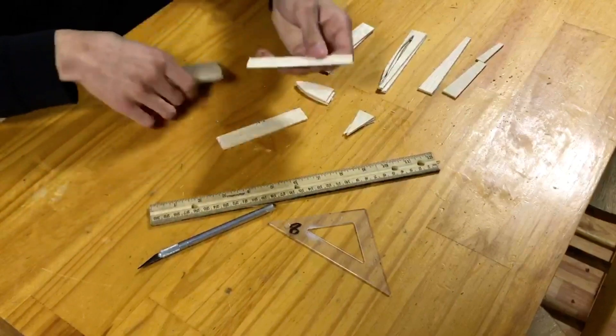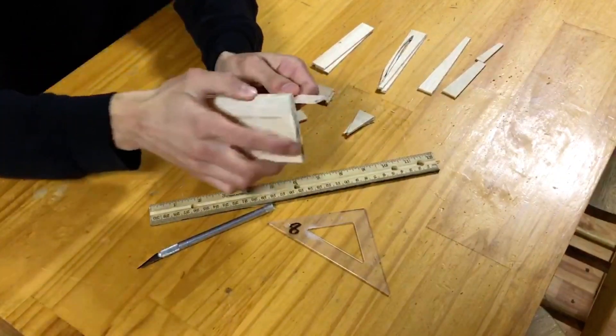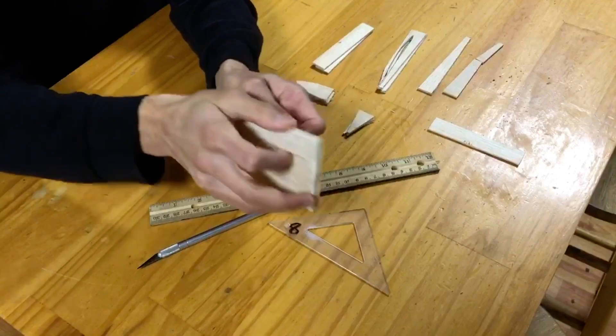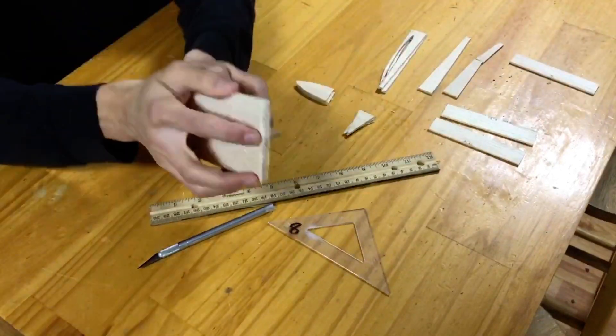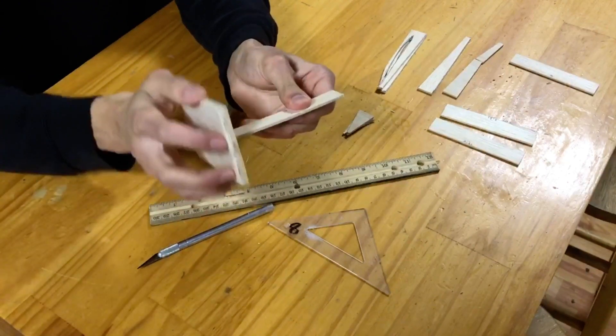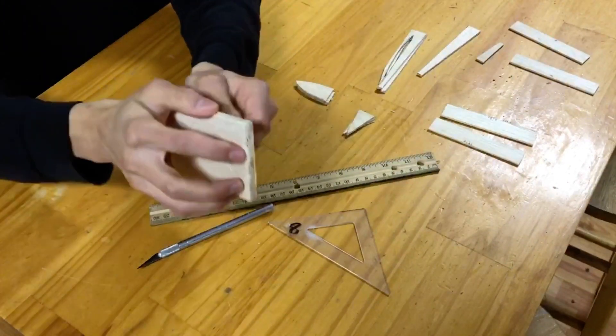We will now take our sanding block and do a few light passes on the straight edges of all the parts, to make sure the straight edges really are straight. And as you can see, I really am taking my time with this step, because sanding hastily and with much pressure can often result in accidentally rounding off flat edges.